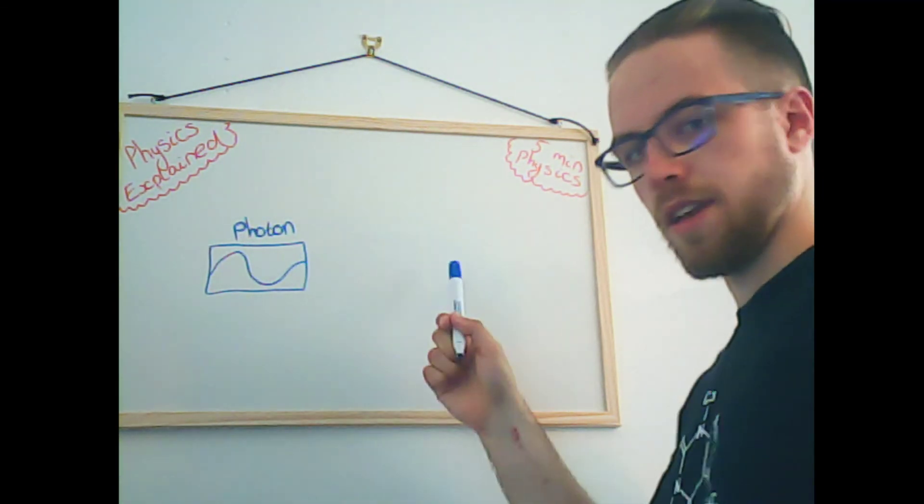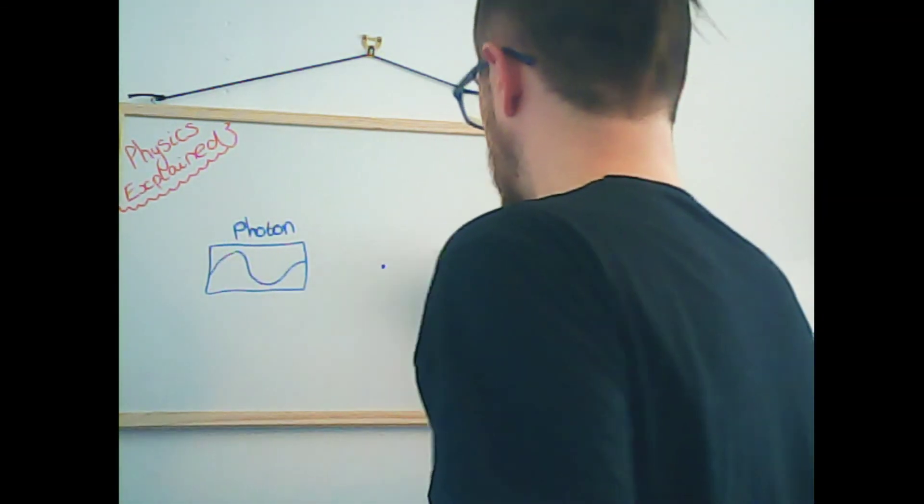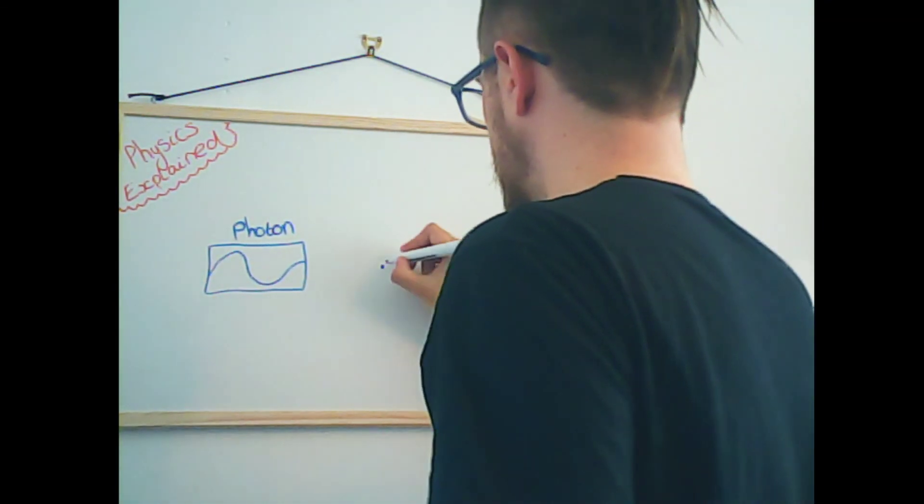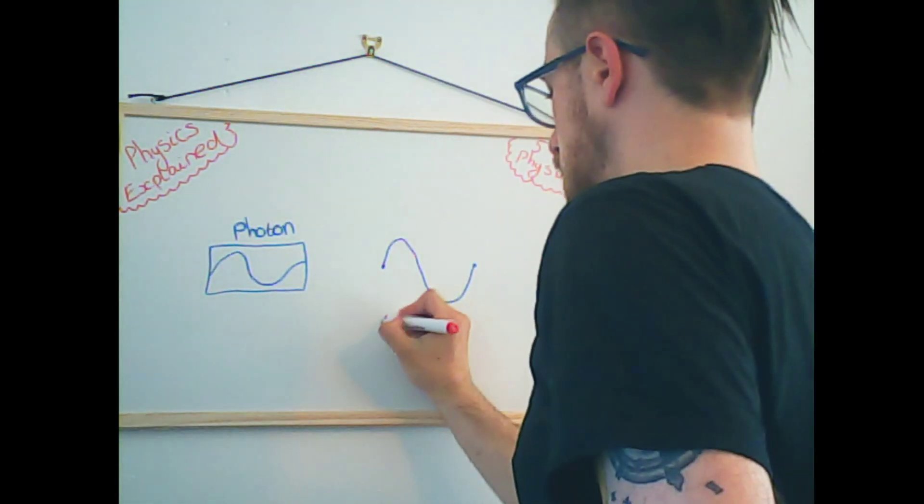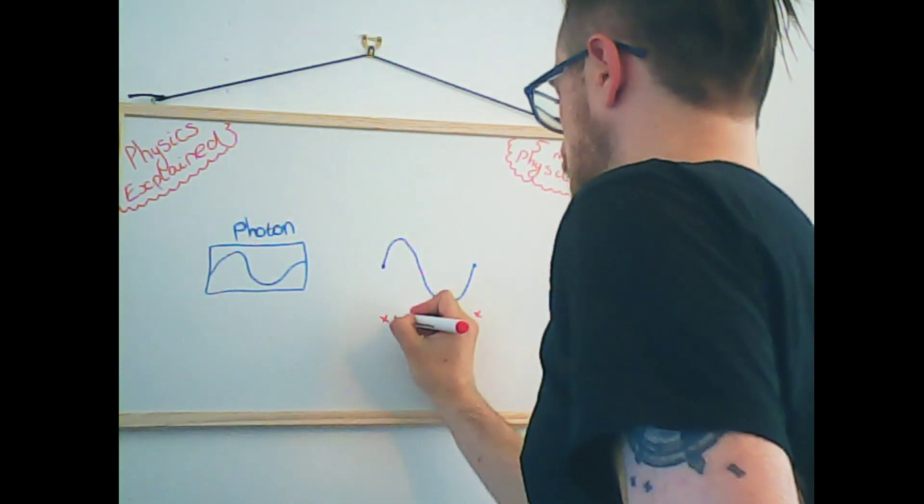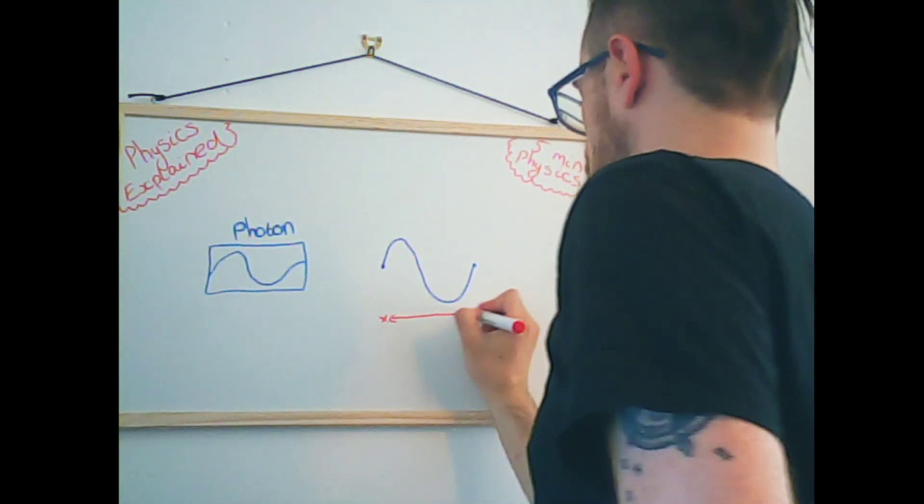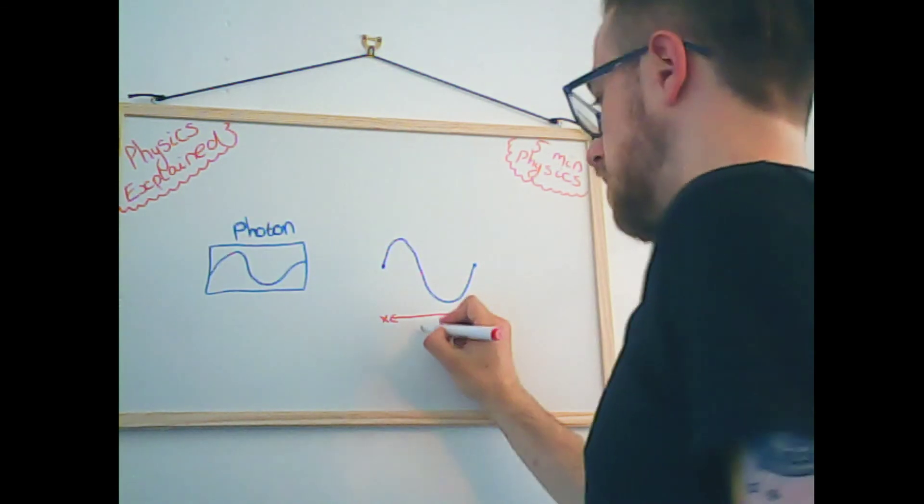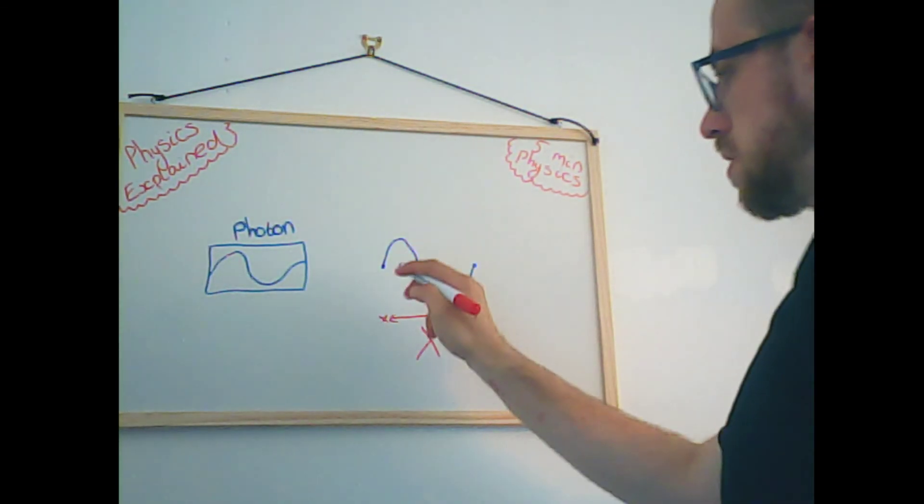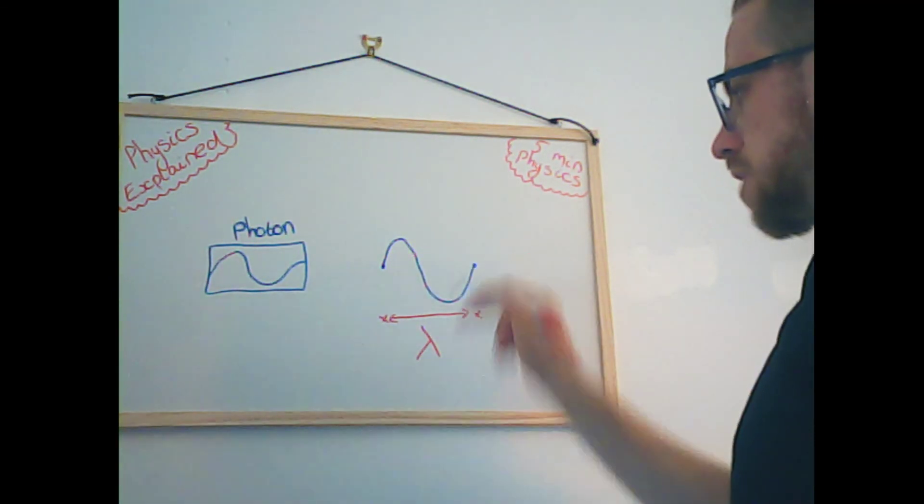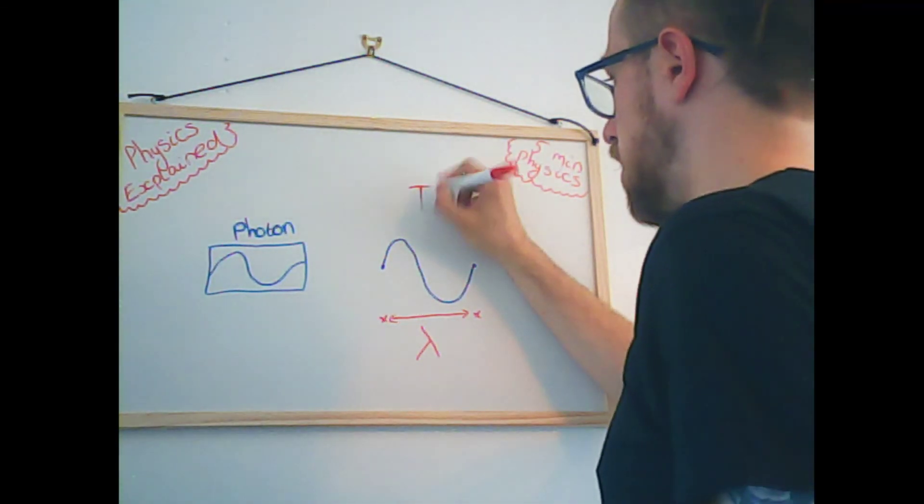So let's draw this wave over here. We have the start point and an end point of the complete wave. The complete wave returns back to its equilibrium state, right? And this distance here from start to finish, we call the wavelength and we give it this symbol.